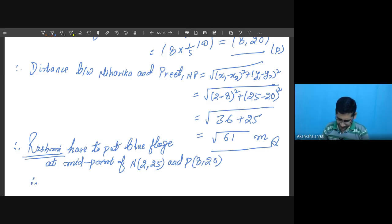So what is the coordinate of Rasmi? Therefore if the coordinate is asked then you have to calculate the coordinate. And if only the length from the Niharika or Preet is asked, then whatever the distance under root 61 we have calculated, that has to be divided by 2.